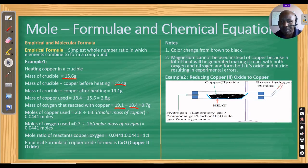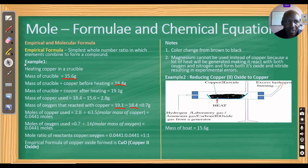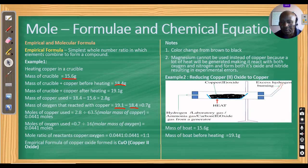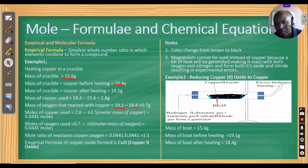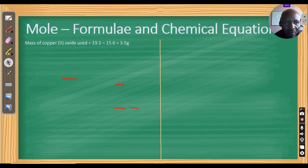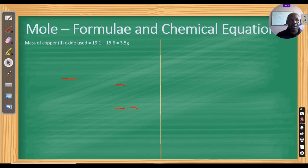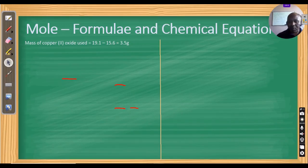Example two: we are reducing copper oxide to copper. The copper oxide is placed in a boat. Before adding copper oxide, the boat weighed 15.6 grams. After adding copper oxide it became 19.1 grams before heating. After heating, the total became 18.4 grams. The mass of copper oxide used was 19.1 − 15.6 = 3.5 grams.